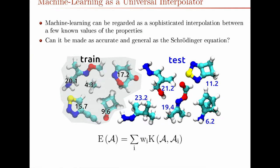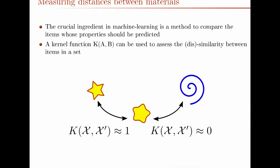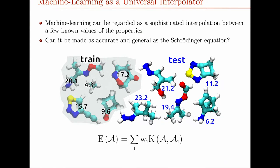The big challenge is how to calculate these kernels. A kernel just gives you the similarity between two objects. We have this sharp star and this fluffy star — they're pretty similar, so their kernel is pretty much one. Whereas this fluffy star is completely different from this blue spiral, so their kernel is basically zero. Members of the training set that are quite close to your test molecule are going to help you better to make this prediction.